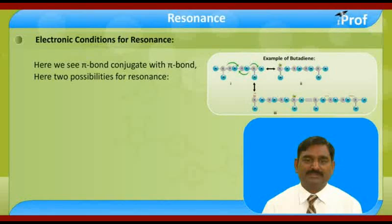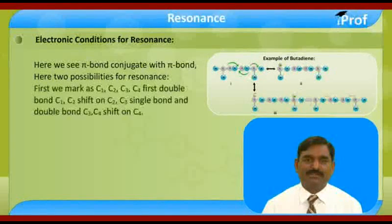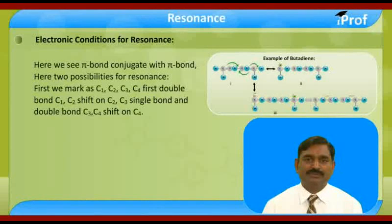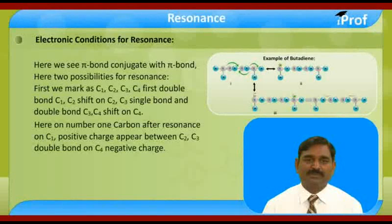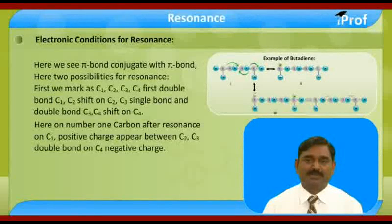Here there are two possibilities for resonance. First, we mark C1, C2, C3, and C4. The first double bond on C1-C2 shifts onto the C2-C3 single bond, and the double bond C3-C4 shifts onto C4. After resonance, on carbon C1 a positive charge appears, between C2-C3 a double bond forms, and on C4 a negative charge appears.